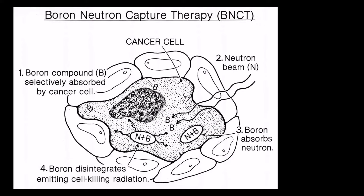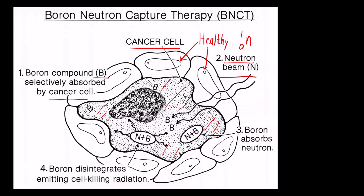With another diagram you can understand this better. The dotted shaded part represents the cancerous cell, while the white ones are the healthy cells. The first step is absorption of boron by the cancer cell. Next, you irradiate it with a neutron beam — mass is one, charge is zero. Boron absorbs the neutron and disintegrates: the unstable B-11 isotope breaks apart, and the rays you can see are the gamma rays. This radiation kills the cancer cell.